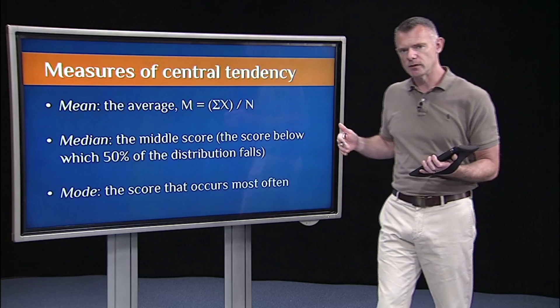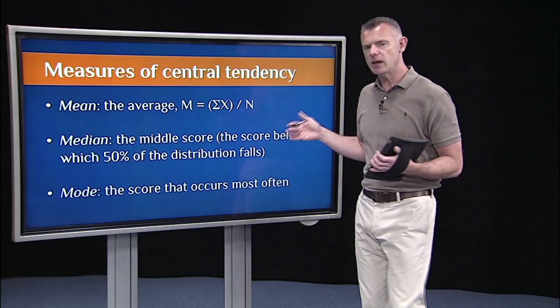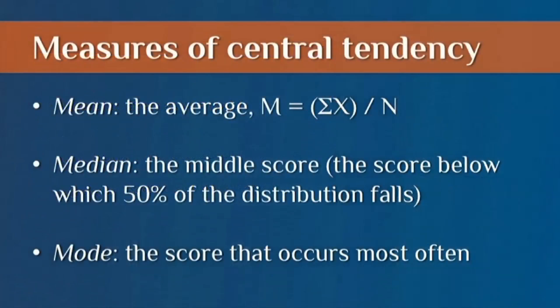The most common examples of measures of central tendency in statistics are the mean, the median, and the mode. The mean is just: sum up all the scores, divide by the number of scores. The median is just the middle score in a distribution — if you lined up all the ratings from highest to lowest and plucked out the middle one, say the 50th out of 100, that would be your median. And the mode is easy: that's just the score that occurs most often. Now that you know how to plot histograms, just look for the peak — that's the mode.